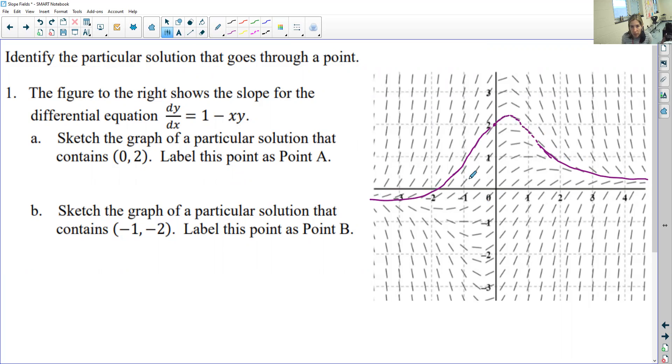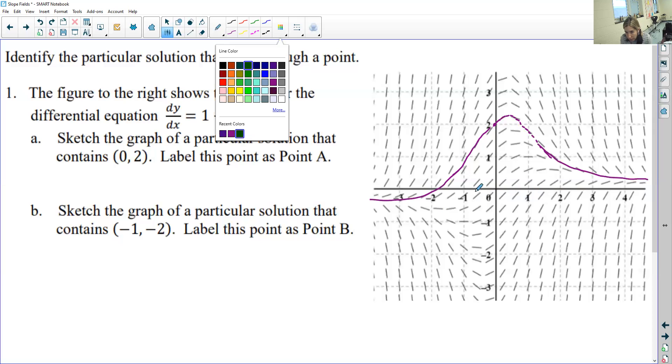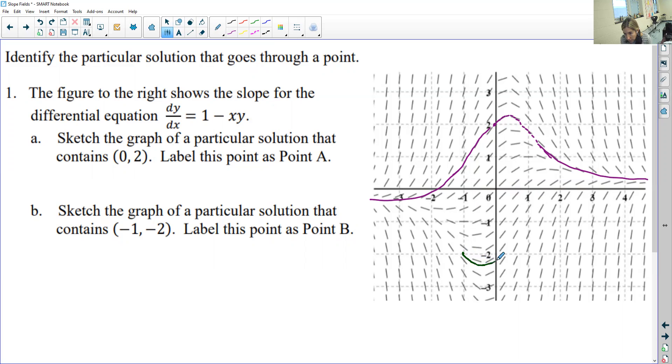Alright, so now let's do it for the point negative 1, negative 2. So negative 1, negative 2. And then if you kind of see where that one is, looks like it kind of went that way. And then I'm trying to remain parallel. It's kind of hard to do. So that one would look something like that.